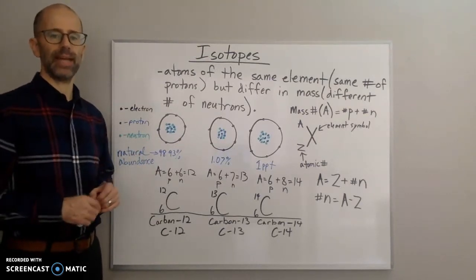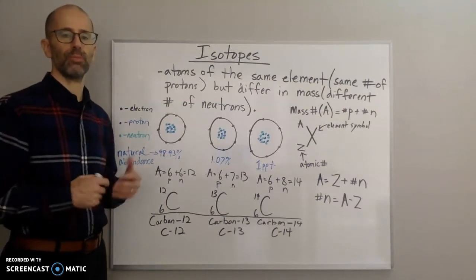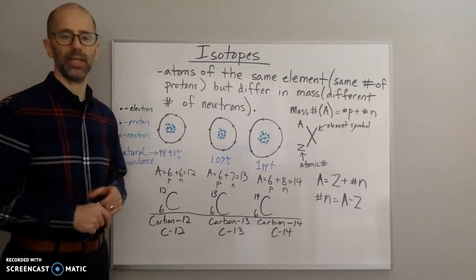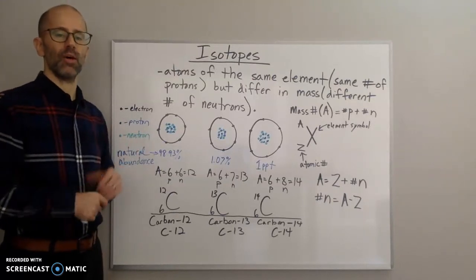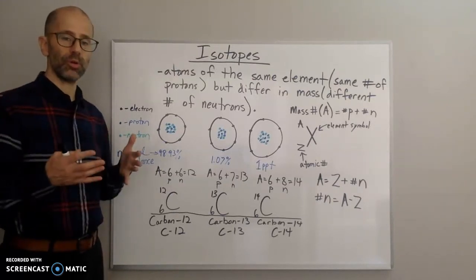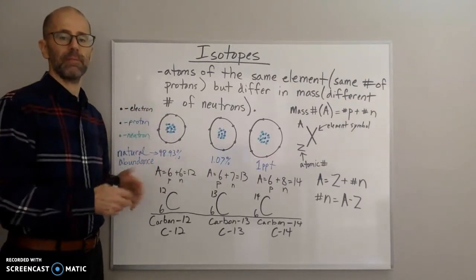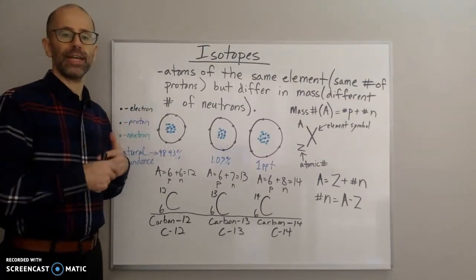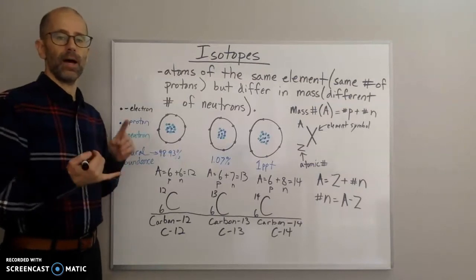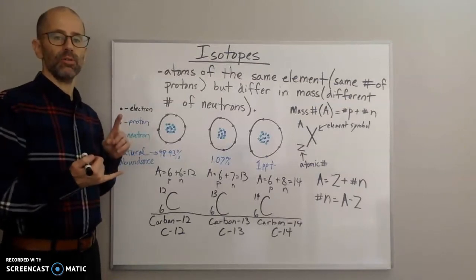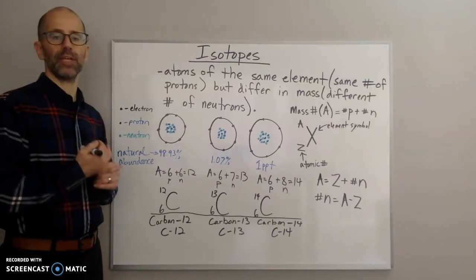which means they have the same number of protons, because the protons identify the element. So isotopes are atoms of the same element, but they differ in their mass.